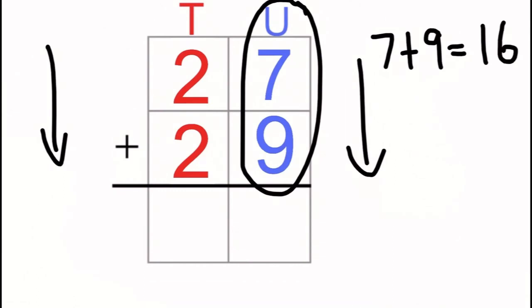It's important to know that each one of these squares can only hold one number. But the answer to our units column is two numbers, 16. So what we do here is we put the six in the units column and the second number, which is a one, shifts into the tens column.